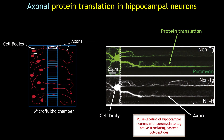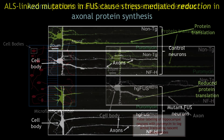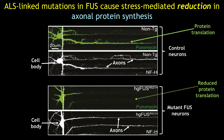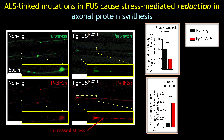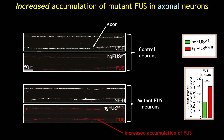I used puromycin pulse-labelling to tag polypeptides undergoing active translation. The first surprising finding was that there is substantial protein synthesis occurring along the axons of wild-type motor neurons. Even more surprising was that translation was predominantly reduced in mutant axons compared to the cell bodies, and there was an increase of phosphorylated EIF2-alpha in those same axons. This reduction in protein translation within axons correlated with the accumulation of mutant FUS in those axons.